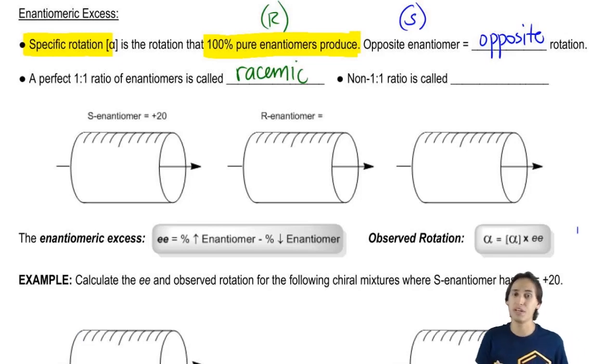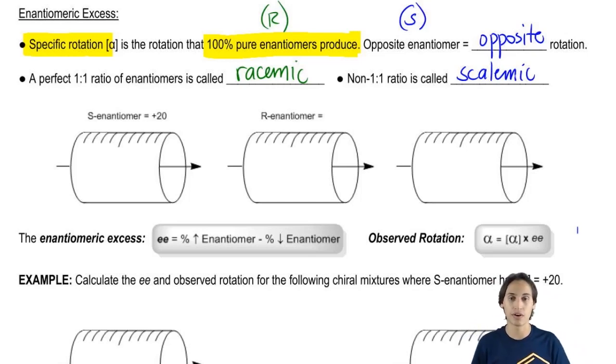A non-1:1 ratio, meaning that it's not pure but it's also not 50-50, is called scalemic. And this one is not used quite as frequently but it's still something that you should be aware of.